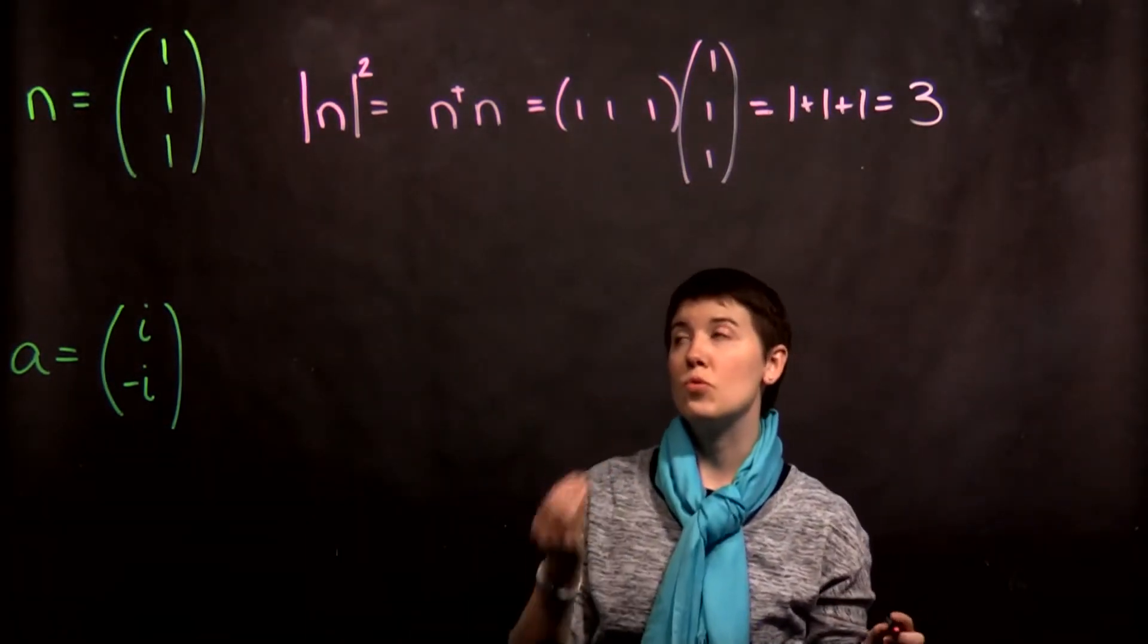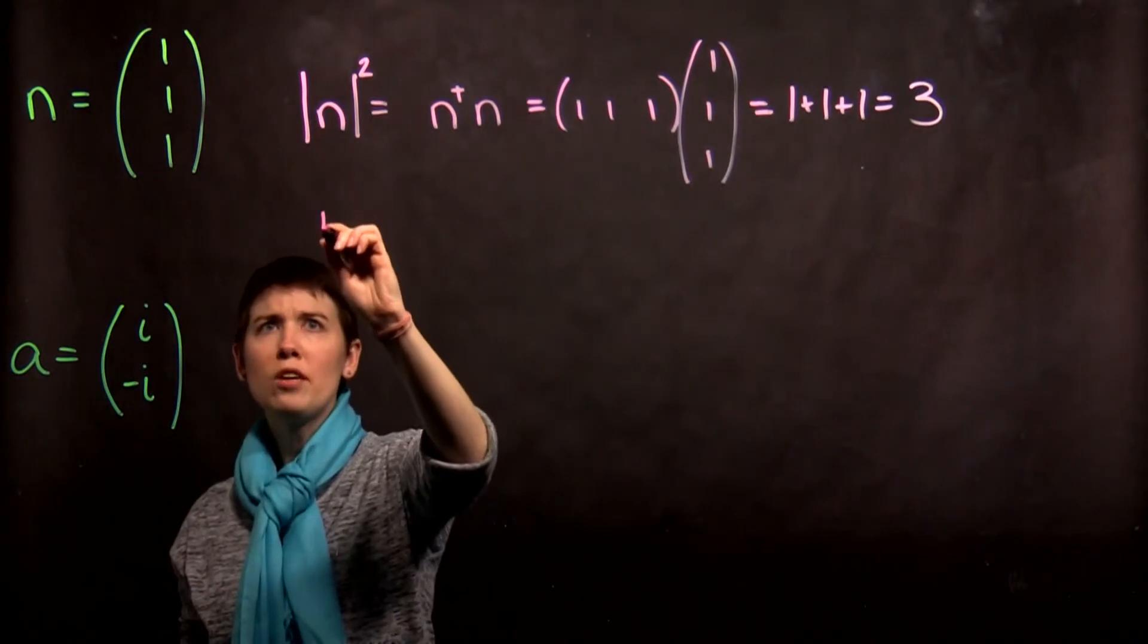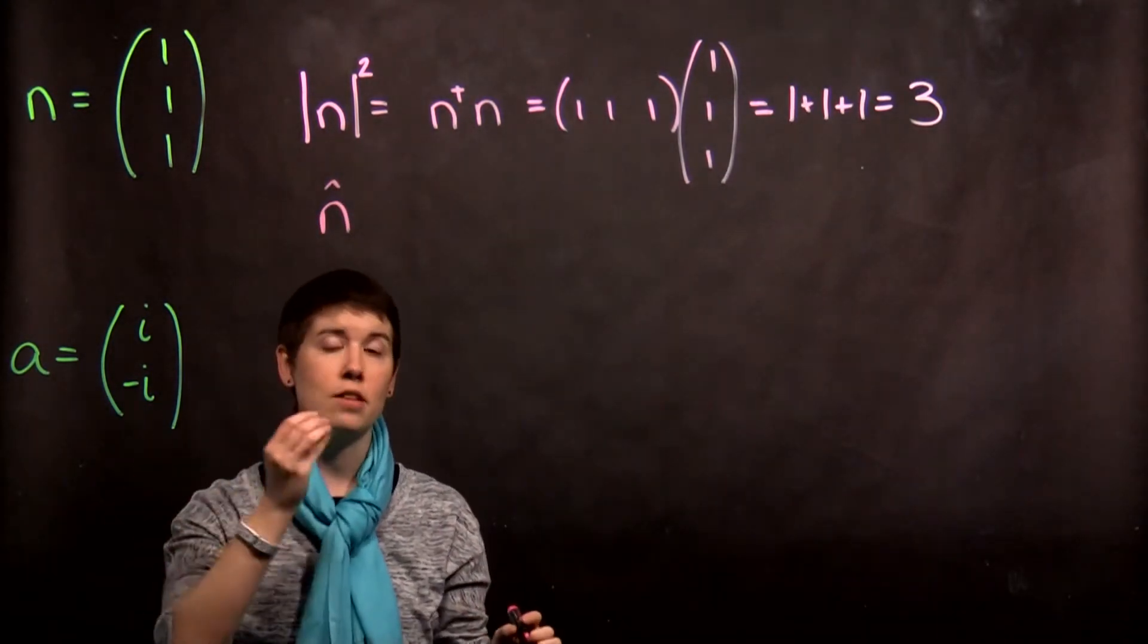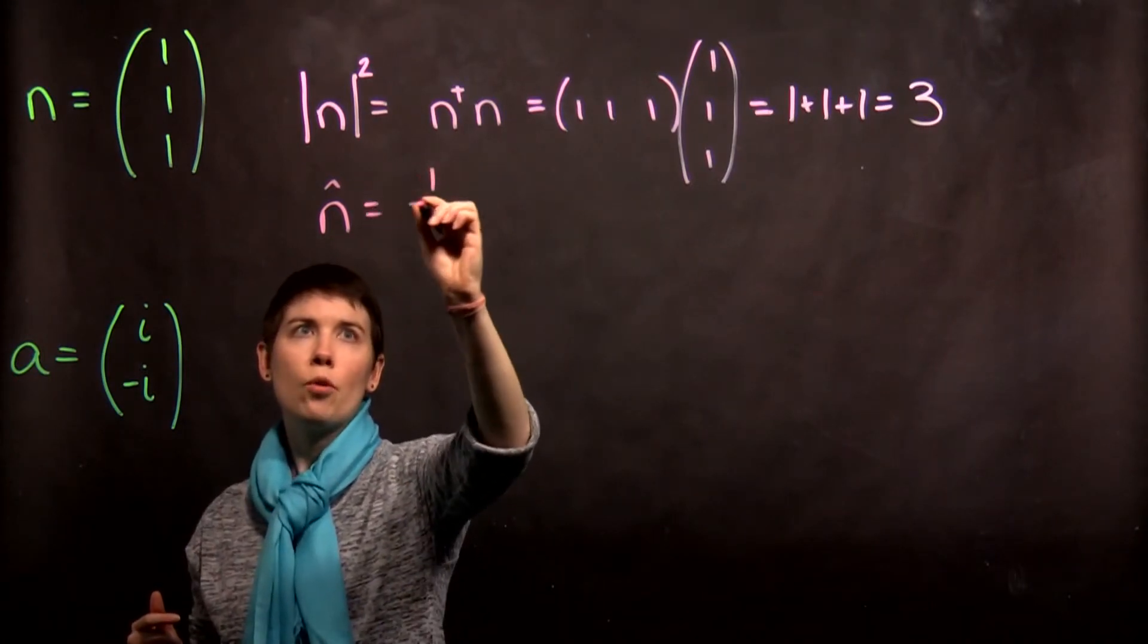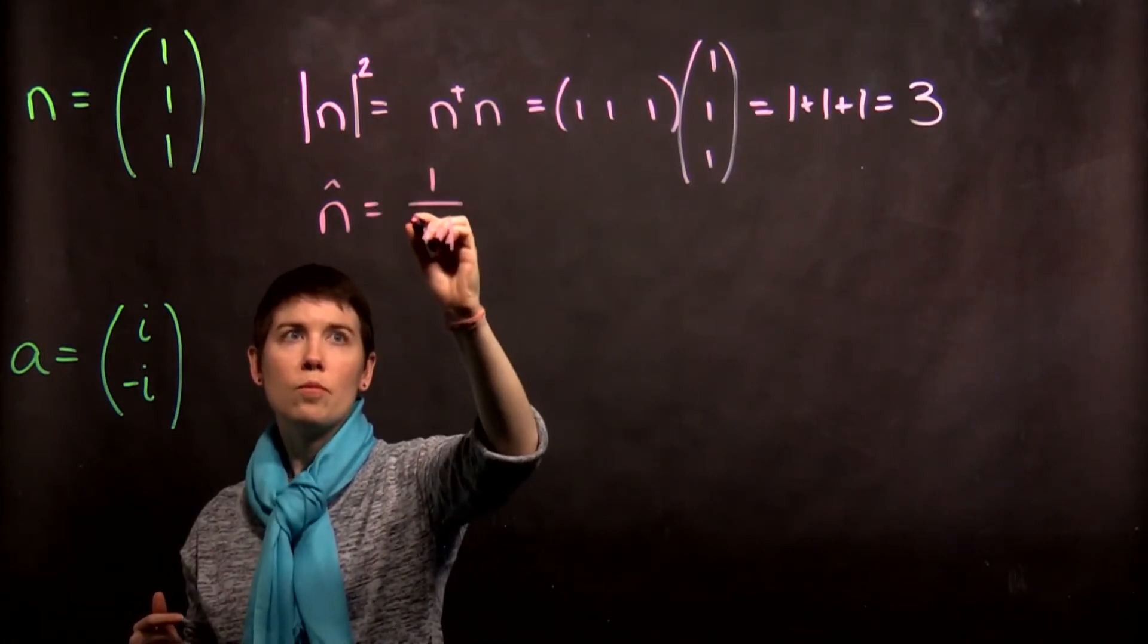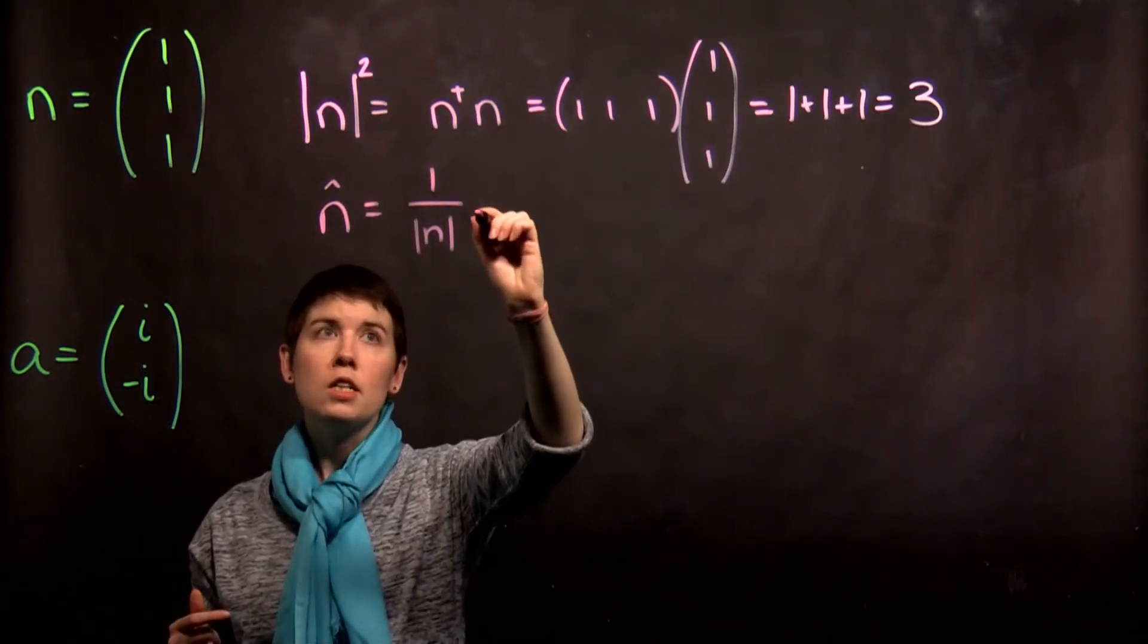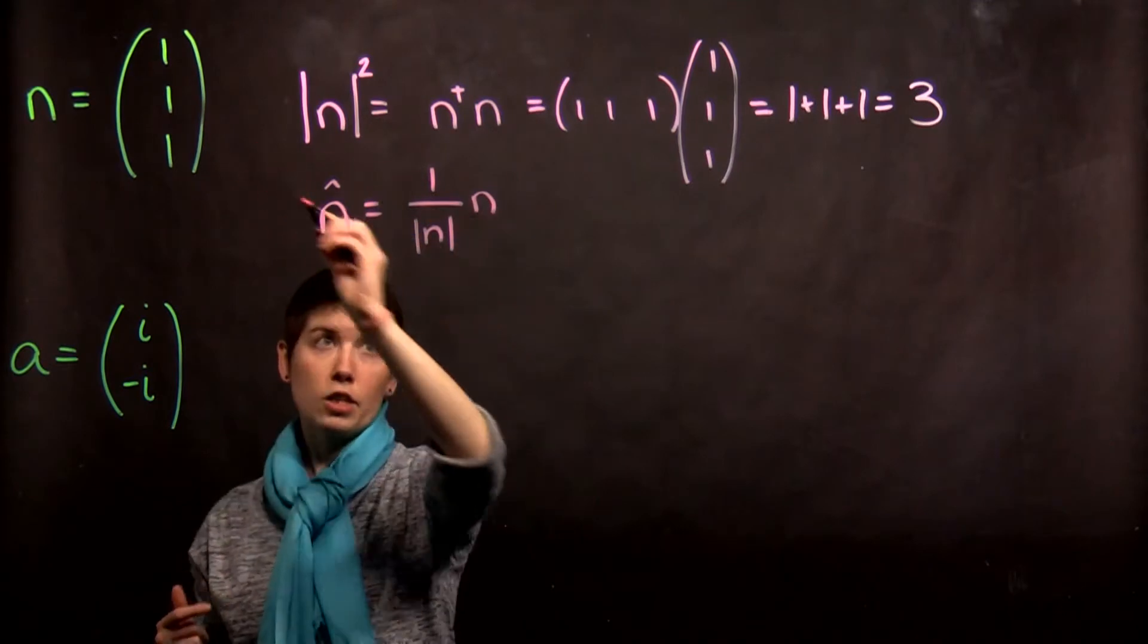Now, notice that this is the magnitude squared. So, if we want to have the normalized vector, a vector that has a length one, that's going to be one over just the magnitude, and in this case, that's going to be square root of three times the original vector.